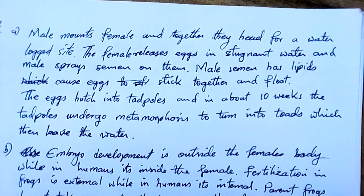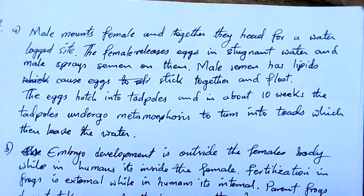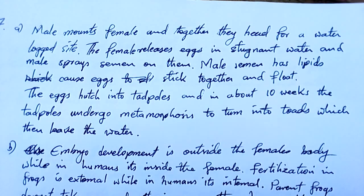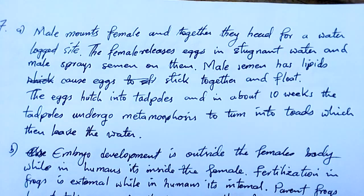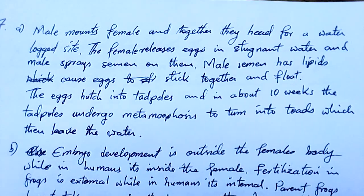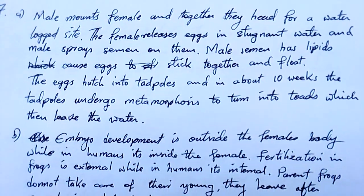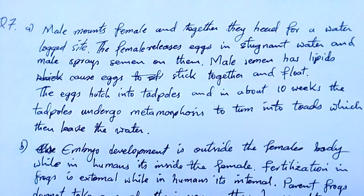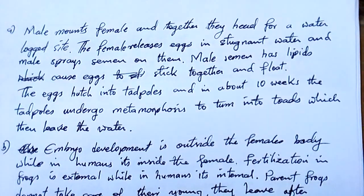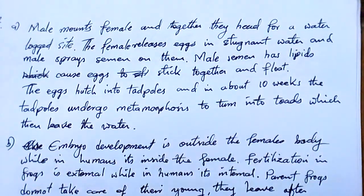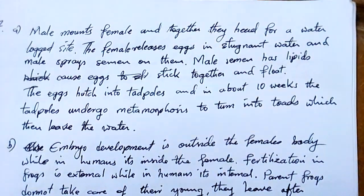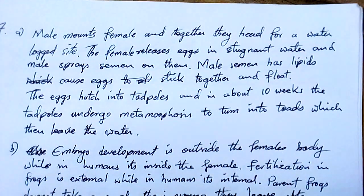The eggs hatch into tadpoles, and in about 10 weeks the tadpoles undergo metamorphosis to turn into toads, which then leave the water. That's how I managed to summarize reproduction in frogs. You can add more if it's too little for the eight marks — try hard to bring out points and don't meander too far.